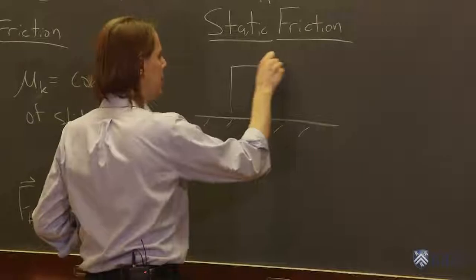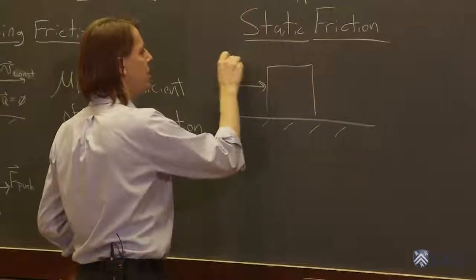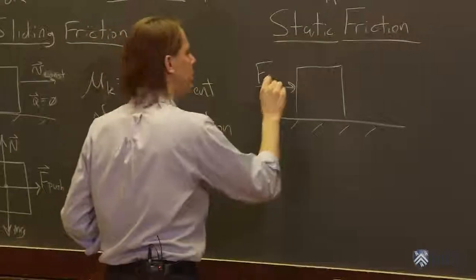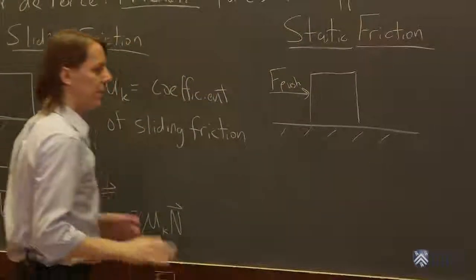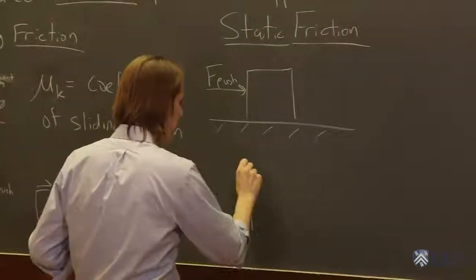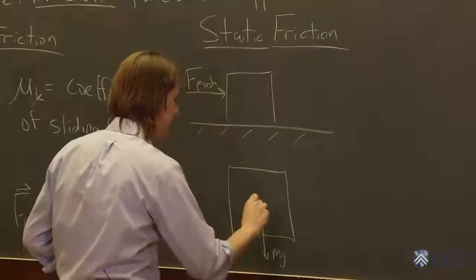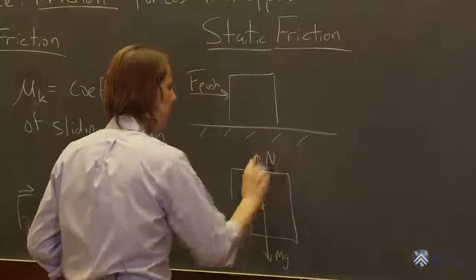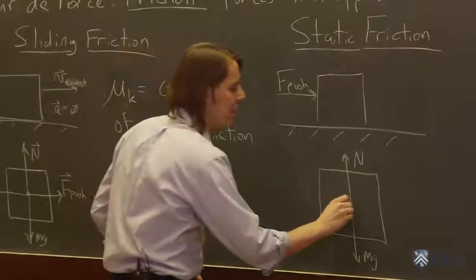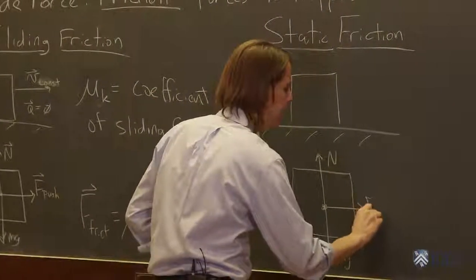So let me draw it again. Here's the surface. Here's the block. No velocity, no acceleration. We're pushing push. Well, let's do the free body diagram. Always do a free body diagram. Here's the block. Mg is down. That's always true. Normal force is up. That's why it's not falling. We're applying f_push.